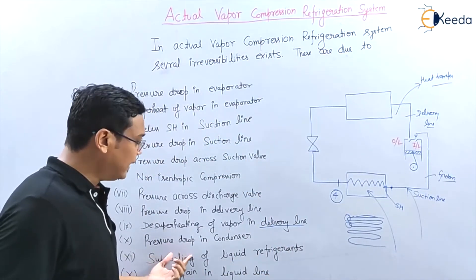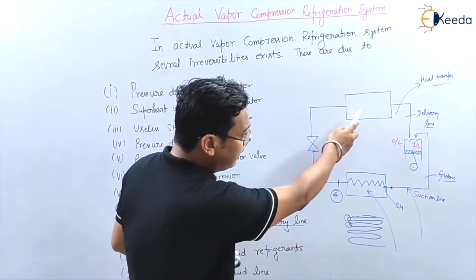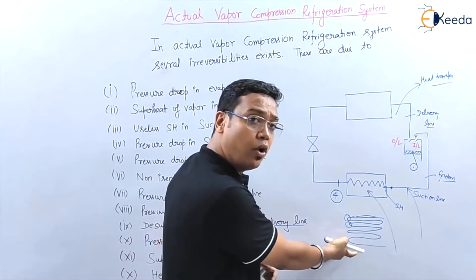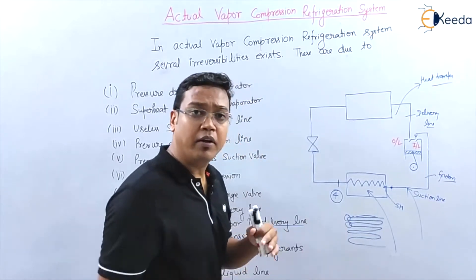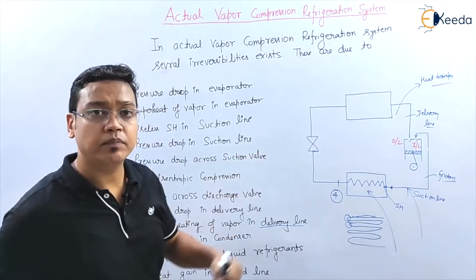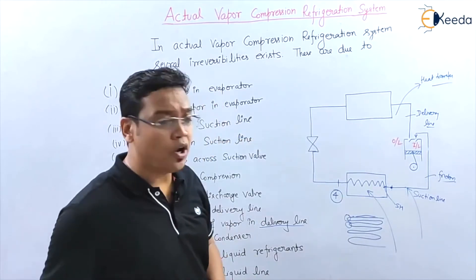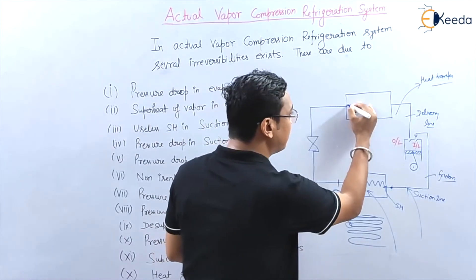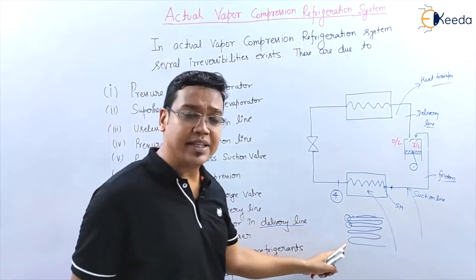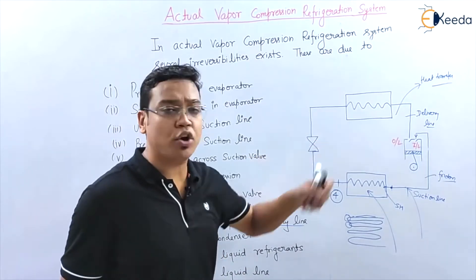There is also a pressure drop in the condenser. The piping arrangement in the condenser has bends and friction, similar to the evaporator. Because of these bends and friction in the condenser piping, pressure drops as the refrigerant passes through the condenser.